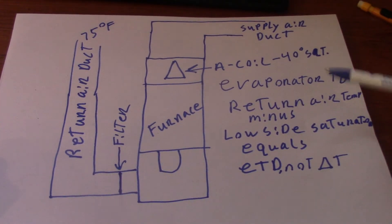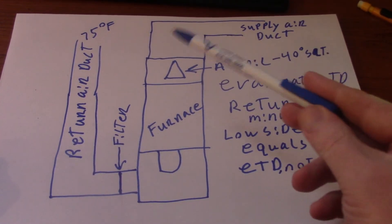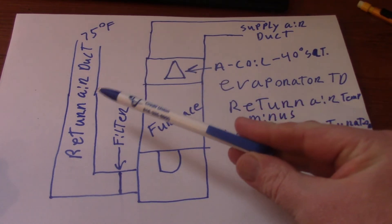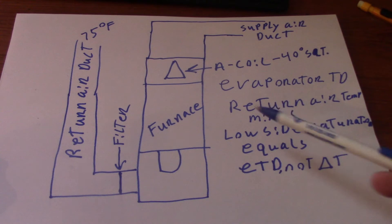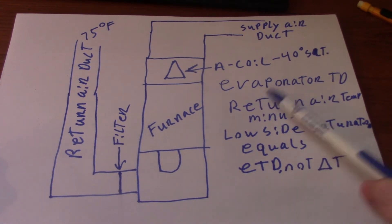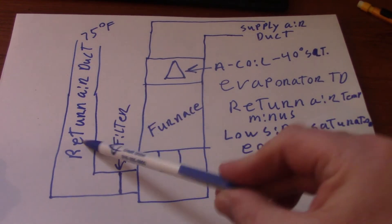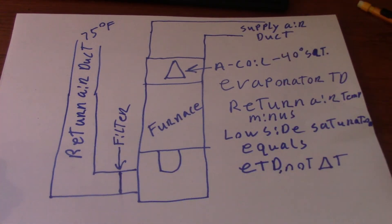What this is is your TD. It's the difference between the temperature of the refrigerant in the coil and the temperature of the return air. So your formula to get your evaporator TD is return air temperature minus your low side saturation. That will equal evaporator TD, not Delta T. Delta T is the return air minus your supply air.